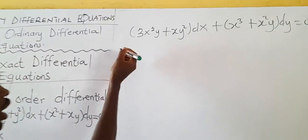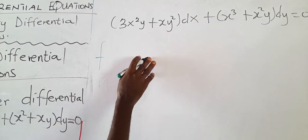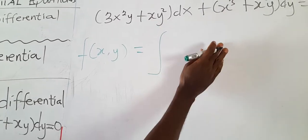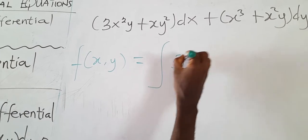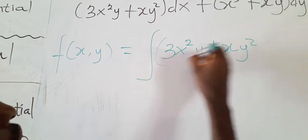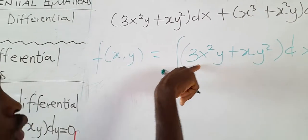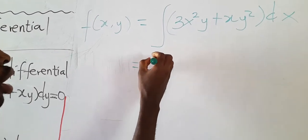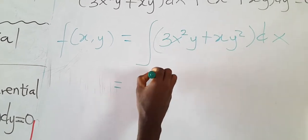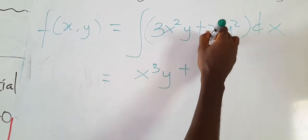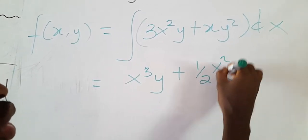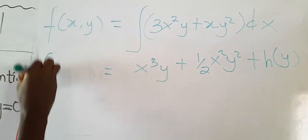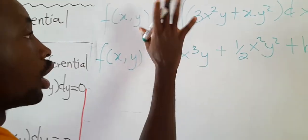We assume the general solution is a function F(x, y). We integrate M with respect to X, keeping Y constant. Integrating 3x²y + xy²: we get x³y + ½x²y², plus an arbitrary function h(y). This is our function F(x, y).